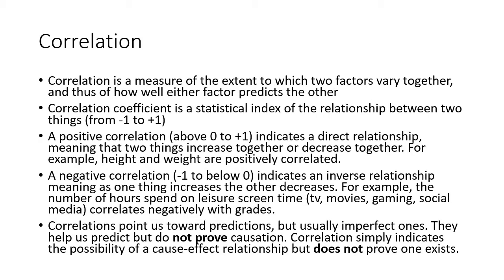Now let's talk about statistics — specifically correlation, which is essential to understanding social science research. Correlation is a measure of how two factors, two variables, are related to one another and how strong that relationship is. You end up with a correlation coefficient — a statistical index number of the relationship between two variables, such as height and weight, or length of time dating and rates of divorce.